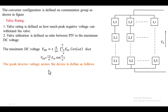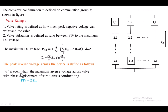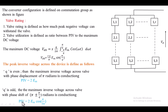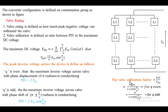The peak inverse voltage depends on how many devices are in the commutation group. If q is even, the peak inverse voltage equals 2Em × cos(π/2q), with a phase displacement of π ± π/q. Now knowing both the peak inverse voltage and maximum DC voltage, the valve utilization factor can be calculated: for q even it is 2π / (sq × sin(π/q)); for q odd it is π / (sq × sin(π/2q)).